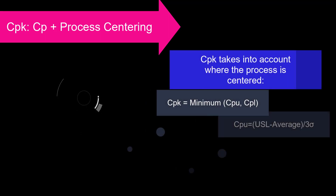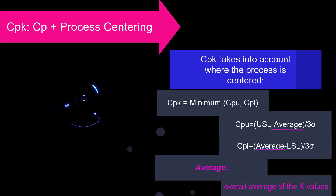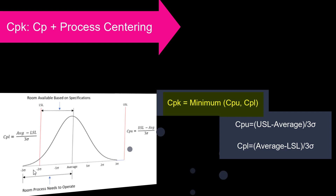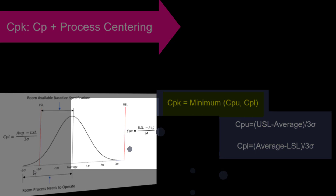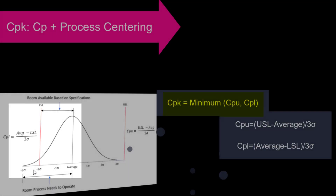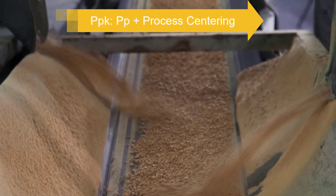Now let's take a look at process centering, starting with CPK. CPK combines CP with process centering — it takes into account where the process is centered. It's the minimum of CPU and CPL, where CPU is the capability based on the upper spec and CPL is the capability based on the lower spec. As you can see in this chart, CPU is the upper spec minus the average divided by three sigma, where sigma comes from the average range on a control chart. CPL is the average minus the lower spec limit divided by three sigma. CPK is therefore the room available based on specifications closest to the average, divided by the room the process needs to operate — three sigma, which is half of the six sigma used in CP.